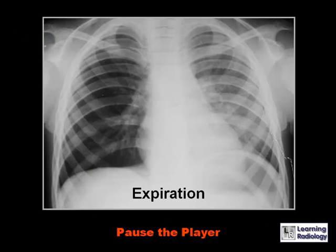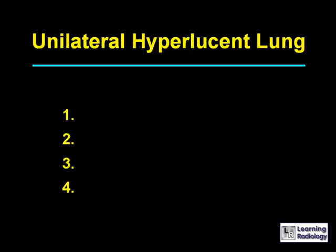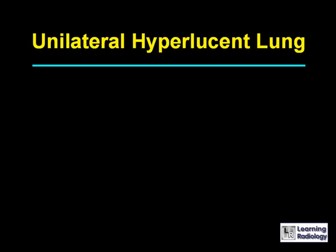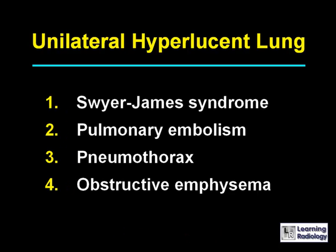This is the next differential: unilateral hyperlucent lung. There are four causes: Swyer-James syndrome, pulmonary embolism, pneumothorax, and obstructive emphysema.